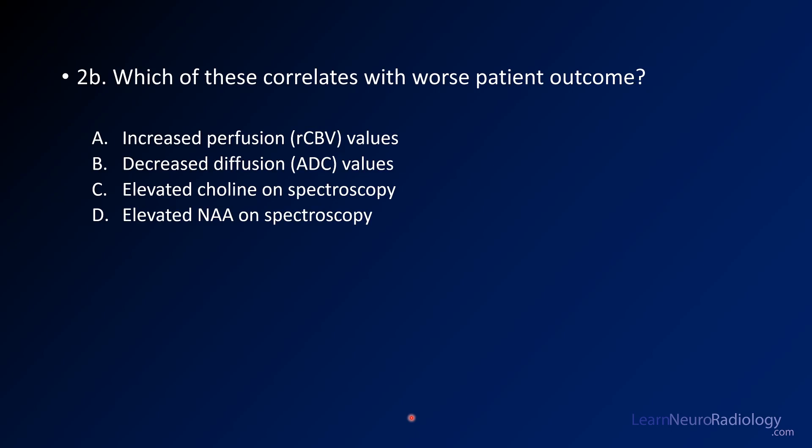Is it elevated perfusion, so CBV elevation? Decreased diffusion or ADC value? Elevated choline on spectroscopy, or elevated NAA on spectroscopy?